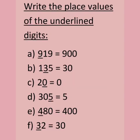Now let's write the place value of the underlined digits. 919 — the underlined digit is 9, which is in the hundreds place, so its place value is 900. 135 — the underlined digit is 3, which is in the tens place, so its place value is 30. 20 — the underlined digit is 0, and it is in the units place, so its value is 0.